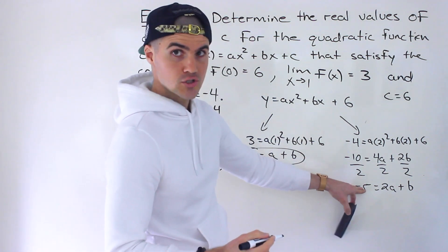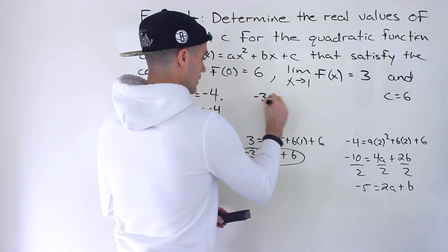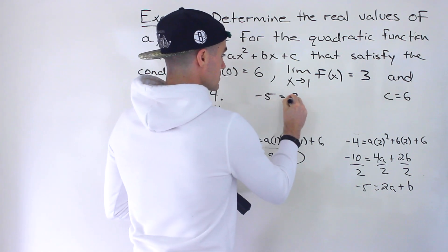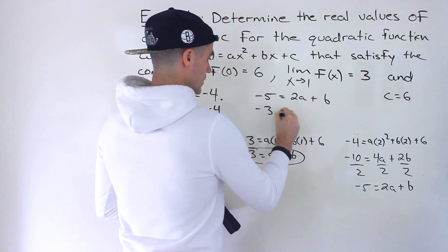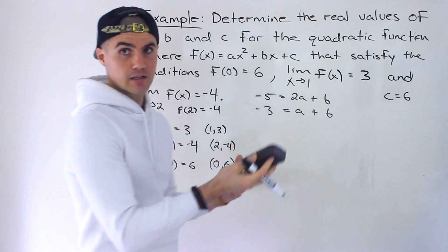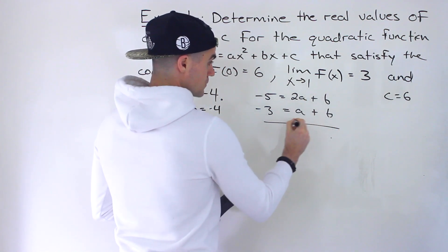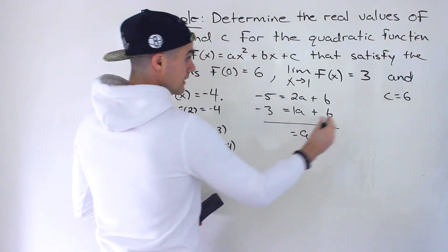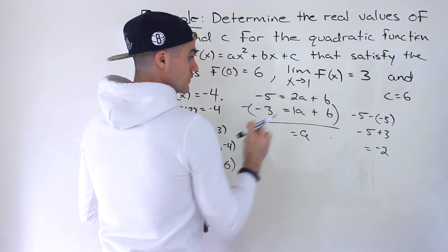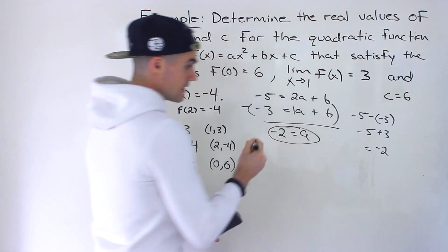We now have two equations and two unknowns. Using elimination: subtract the first equation (a plus b equals negative 3) from the second (2a plus b equals negative 5). The b terms cancel: 2a minus a gives a, and negative 5 minus negative 3 gives negative 2. So a equals negative 2.